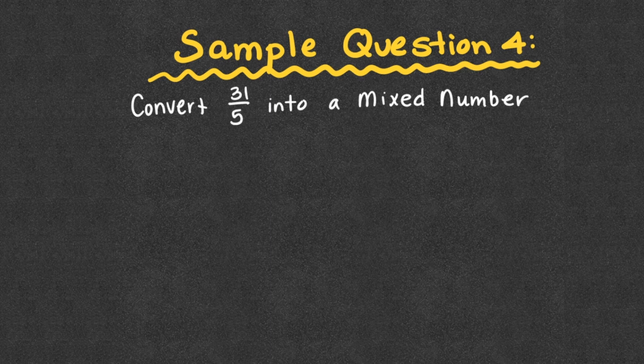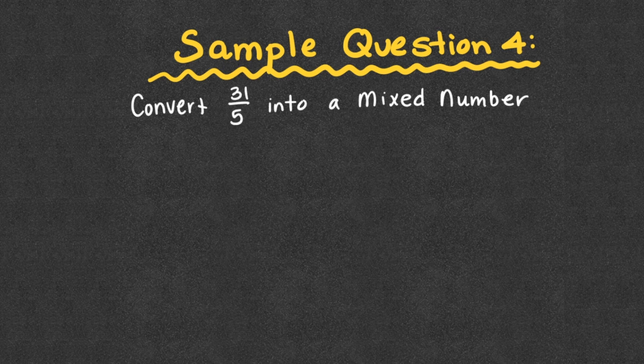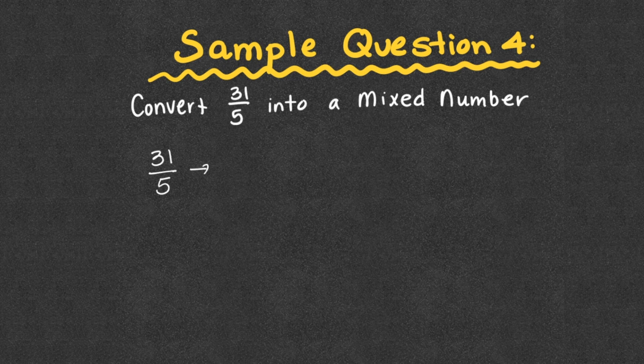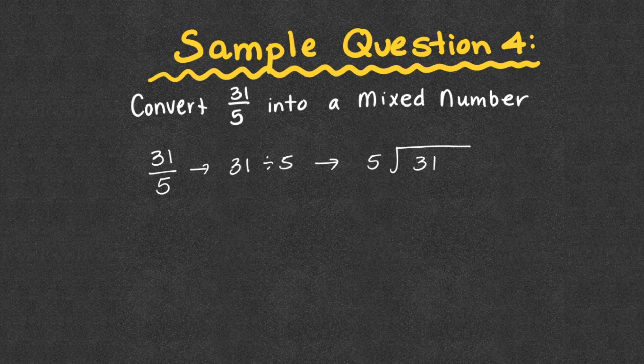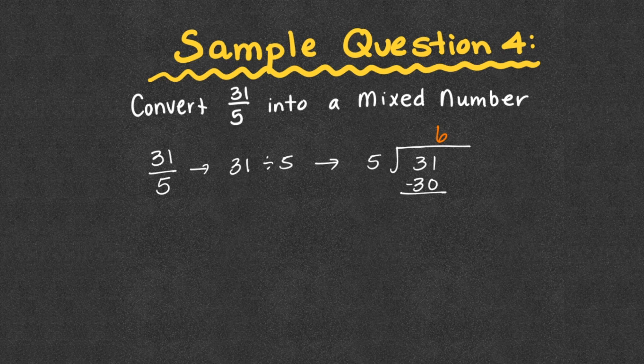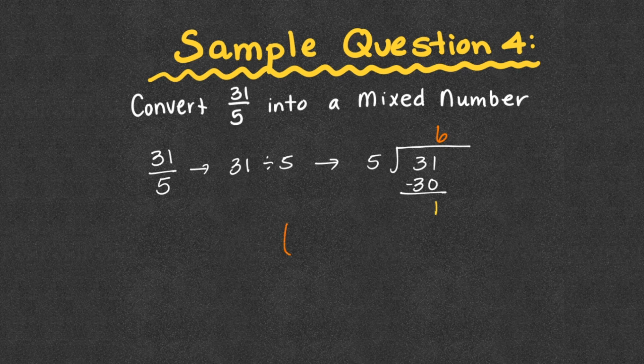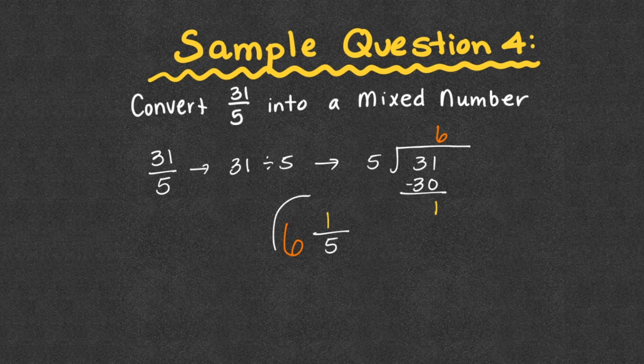Sample question number 4: We're going to convert 31 fifths into a mixed number. So we see 31 fifths is really 31 divided by 5. So 31 divided by 5 is going to give us 6. 6 times 5 is 30. Subtract and we get 1. 5 went into 31 six whole times, and it had 1 left over out of 5 to make a group. So our answer is 6 and 1 fifth.